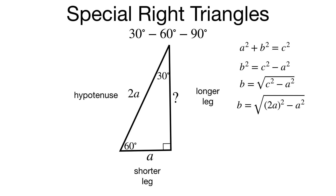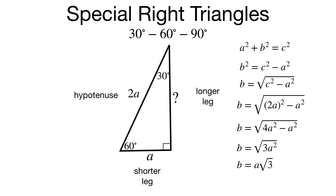Be careful squaring 2A — we want to square both factors. So 2A quantity squared is 4A squared, giving us the square root of 4A squared minus A squared. That leaves 3A squared under the radical. The square root of A squared is A, and the square root of 3 is just the square root of 3, so B equals A times the square root of 3. That's how we get the longer leg length to be A times the square root of 3.